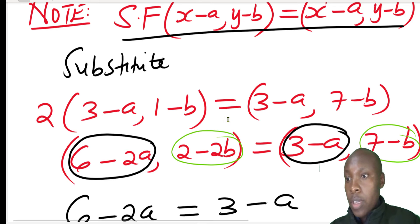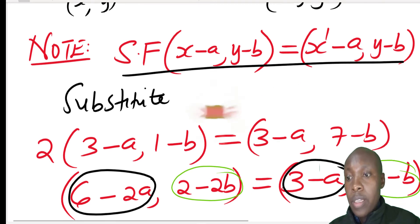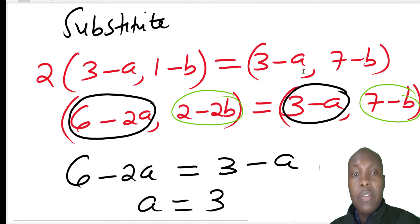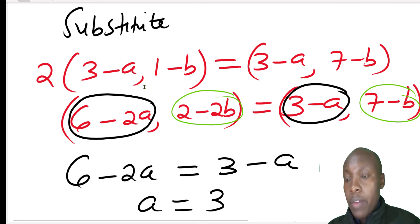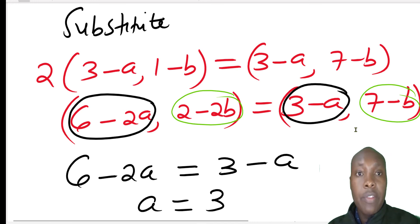Substituting the values of x, y, x', y' and the scale factor into the formula, we get: 2 × (3 − A, 1 − B) = (3 − A, 7 − B). Multiplying everything inside the bracket by 2 gives: (6 − 2A, 2 − 2B) = (3 − A, 7 − B).